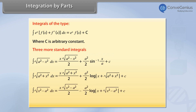The integral of √(x²−a²) is equal to (x/2)·√(x²−a²) minus (a²/2)·log|x + √(x²−a²)| plus c, where c is an arbitrary constant.